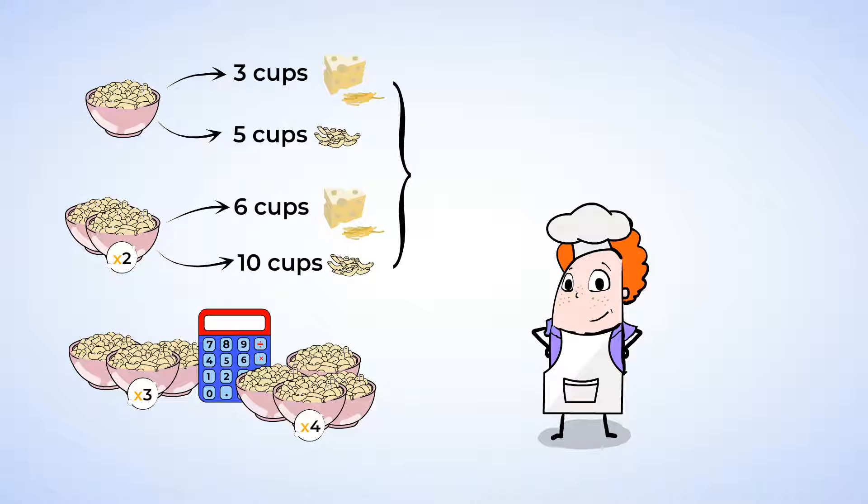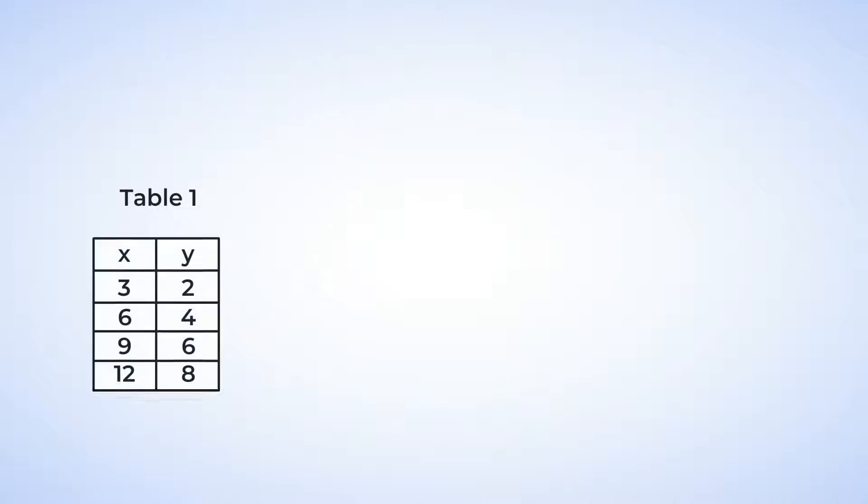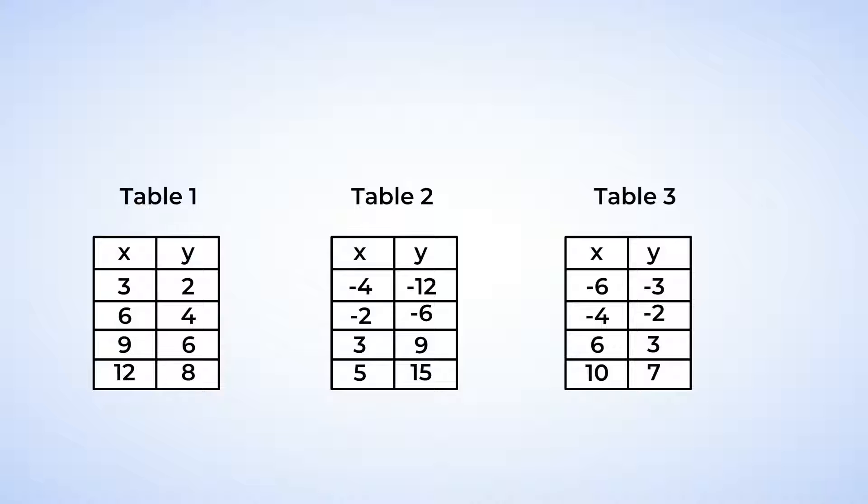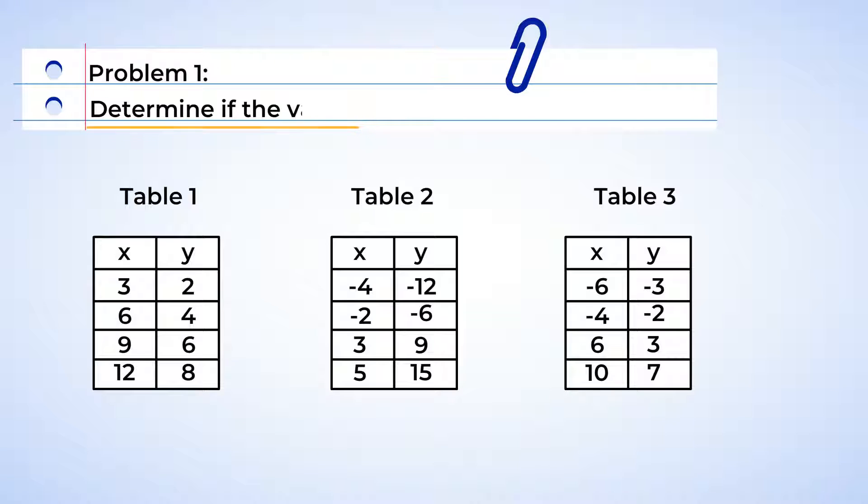We call this a proportional relationship. Today, we're going to practice recognizing if numbers have a proportional relationship. Let's begin by looking at a few tables with different values. Alright, let's determine if the values are proportional or not.